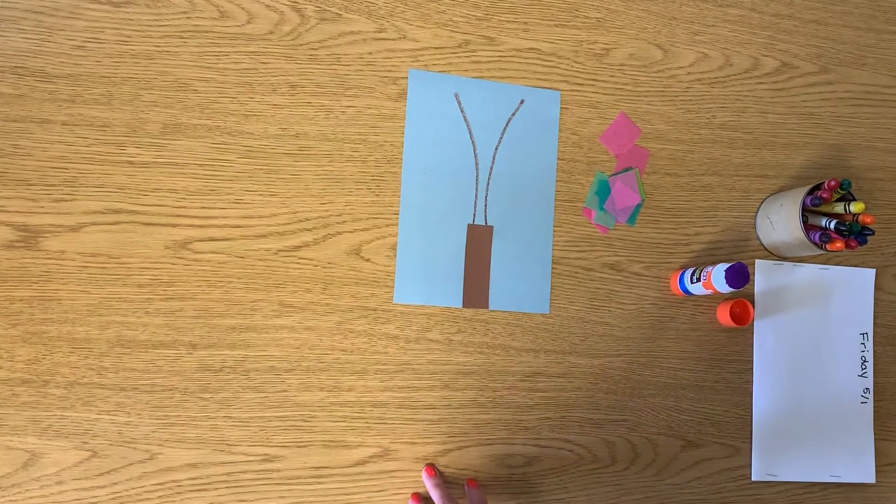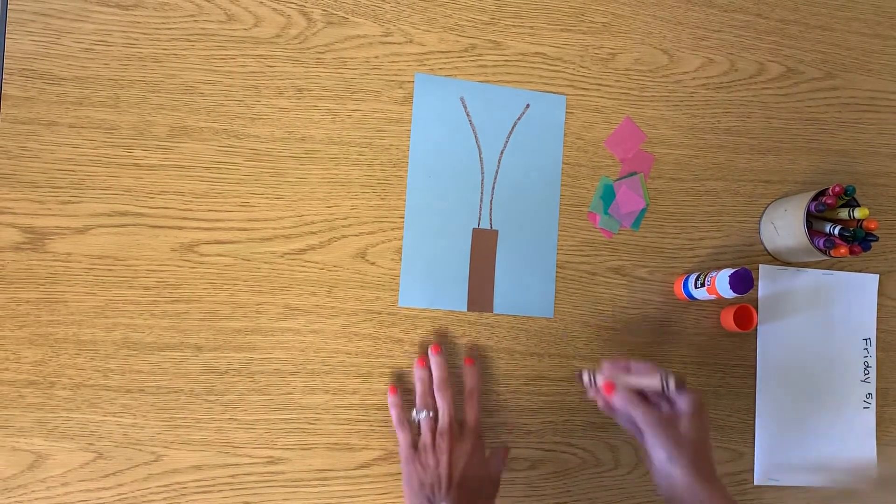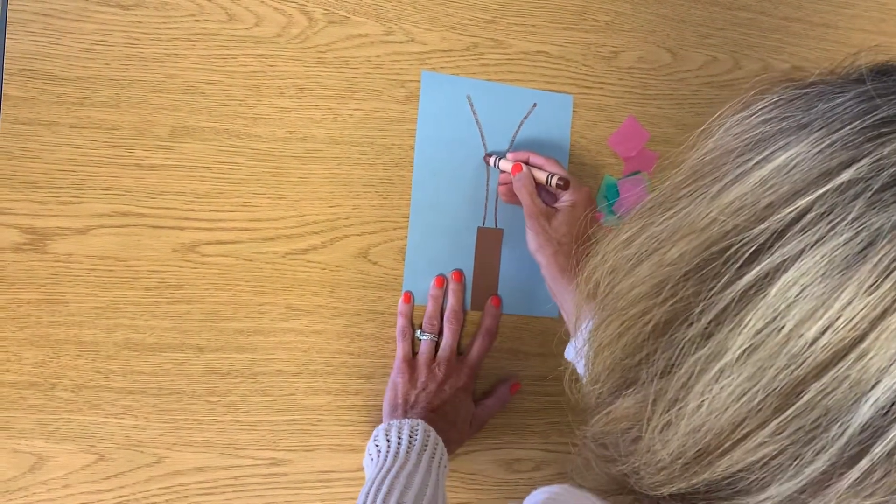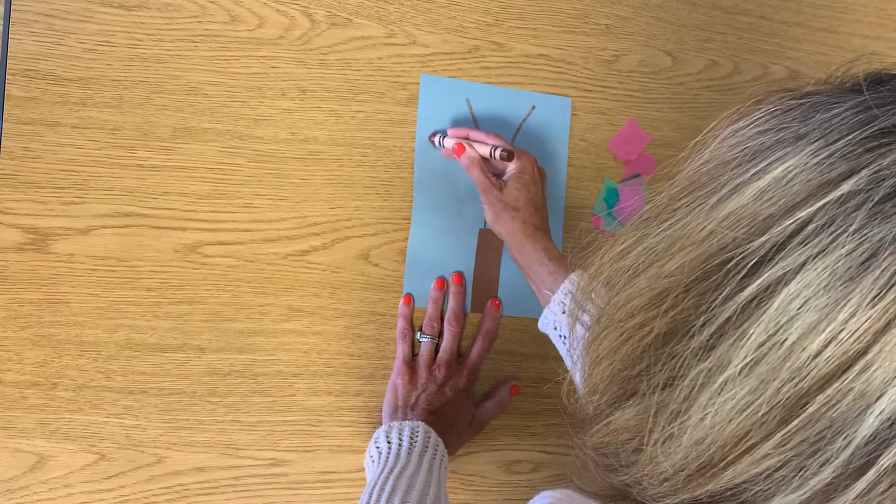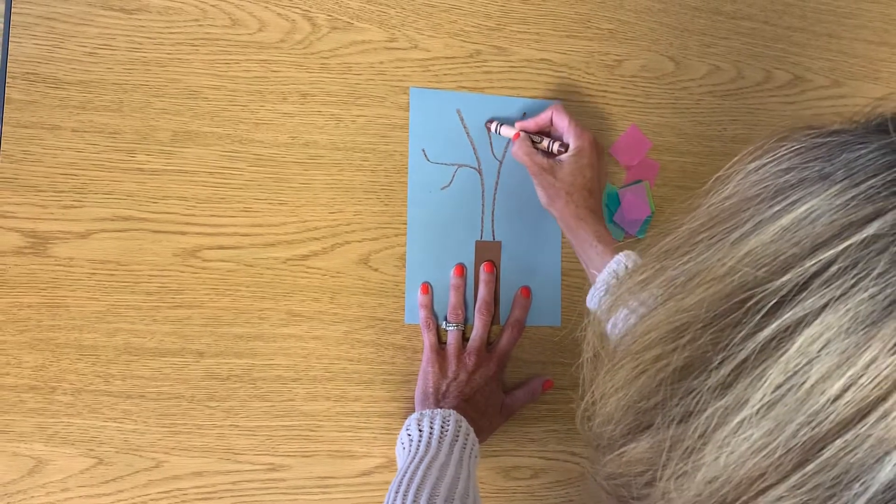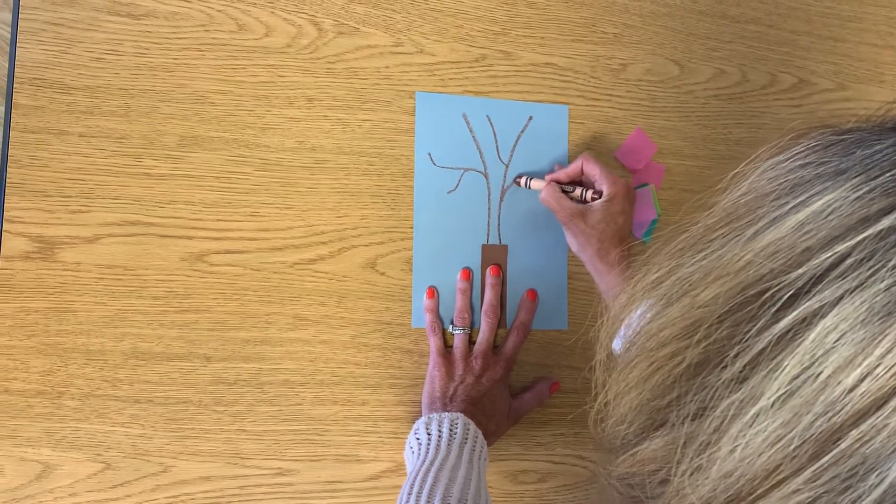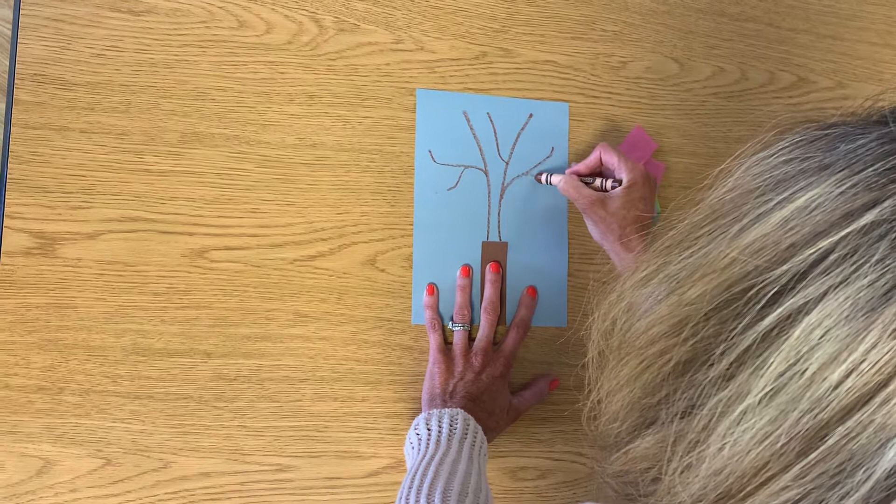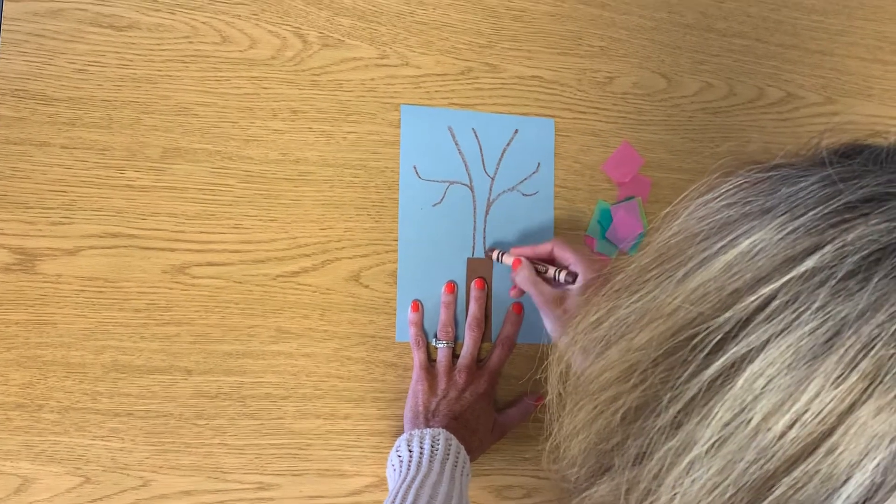So I have two branches, but that's not enough. Trees have more than two branches. Sometimes they even have branches that grow off of other branches. So all I'm going to do here is make my tree have lots of branches.